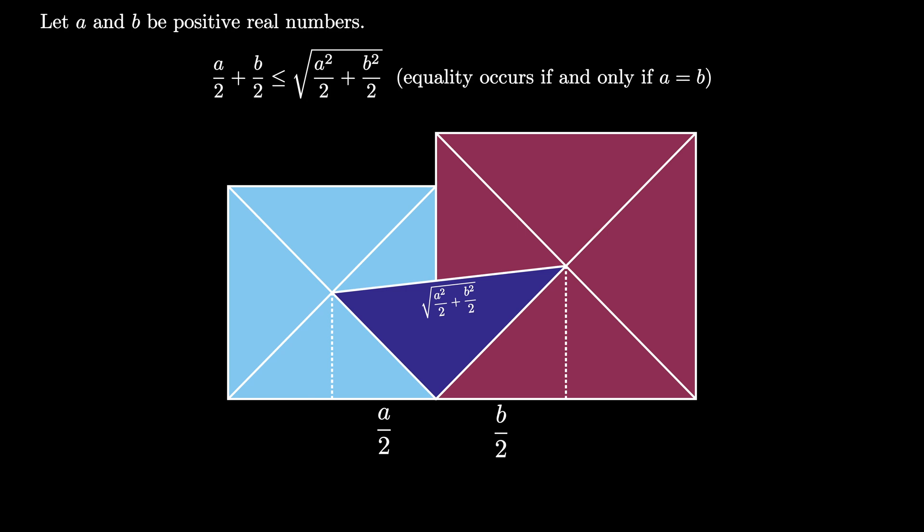A over 2 plus B over 2 is the arithmetic mean of A and B and the square root of A squared over 2 plus B squared over 2 is the root mean square of A and B so this is known as the arithmetic mean root mean square inequality.